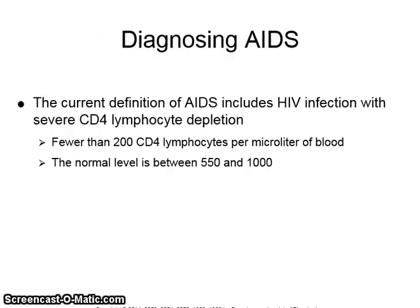The current definition of AIDS includes HIV infection with severe CD4 lymphocyte depletion — fewer than 200 CD4 lymphocytes per microliter of blood. The normal level is between 550 and 1000.